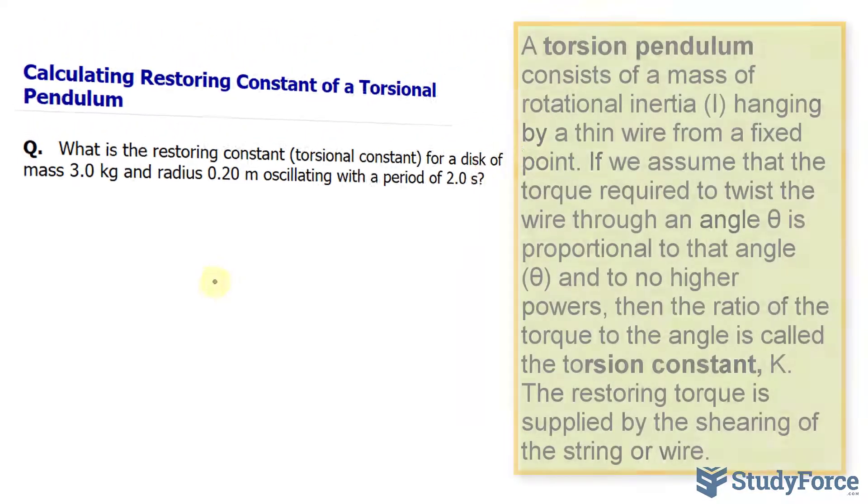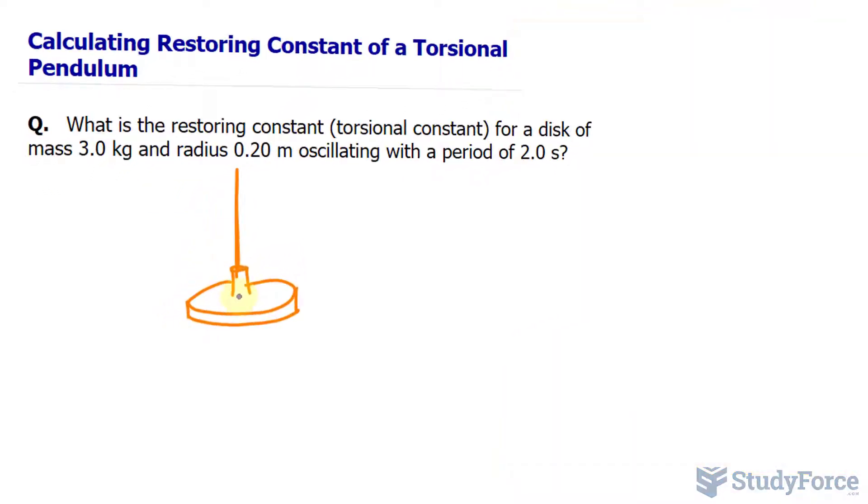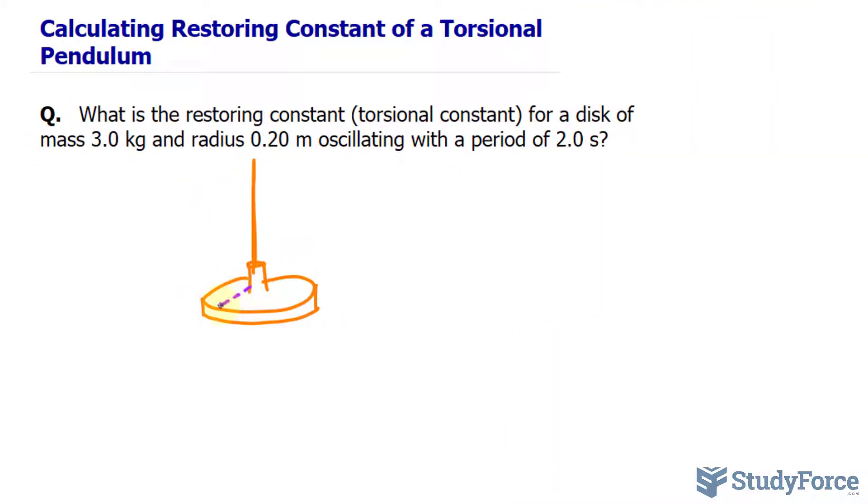So, we have a disc that looks like this, and I'll try to make it 3D for you. It is connected to a wire, and it has a radius of 0.2 meters, so I'll draw that with this purple line. That's the radius of 0.2 meters, and that'll come in handy very soon. The mass is given also as 3.0 kilograms.